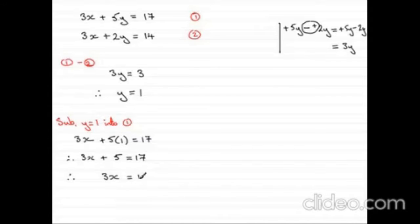And then, we have 3x equals 17 minus 5, which means 12. And then, we divide both sides by 3. And x here is 4.